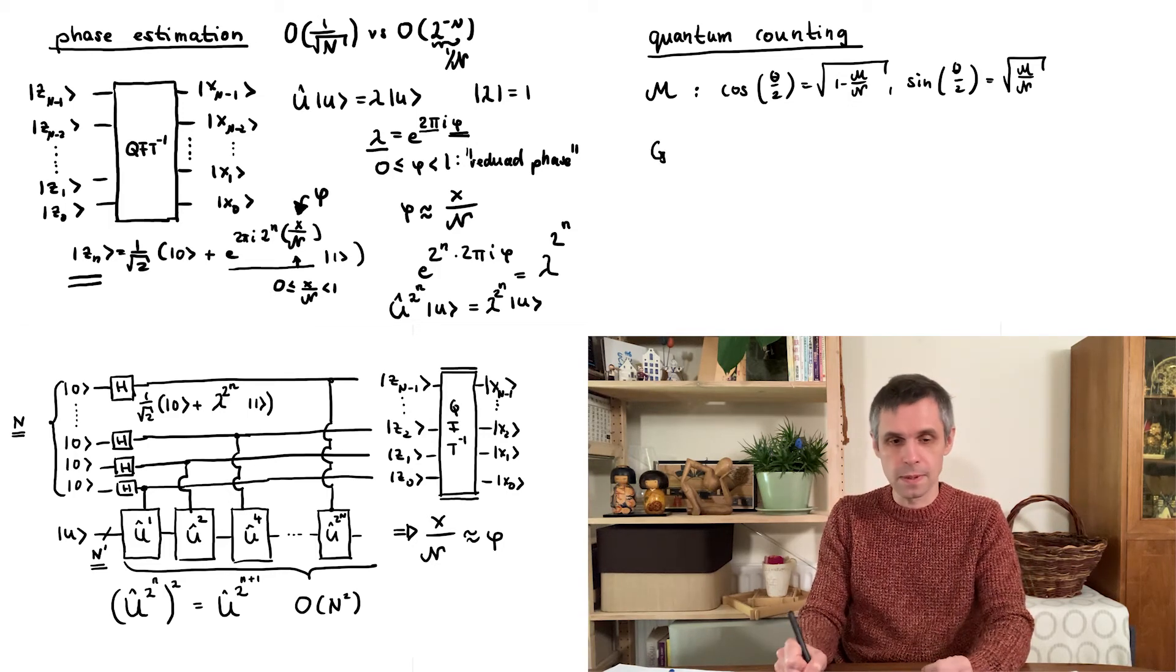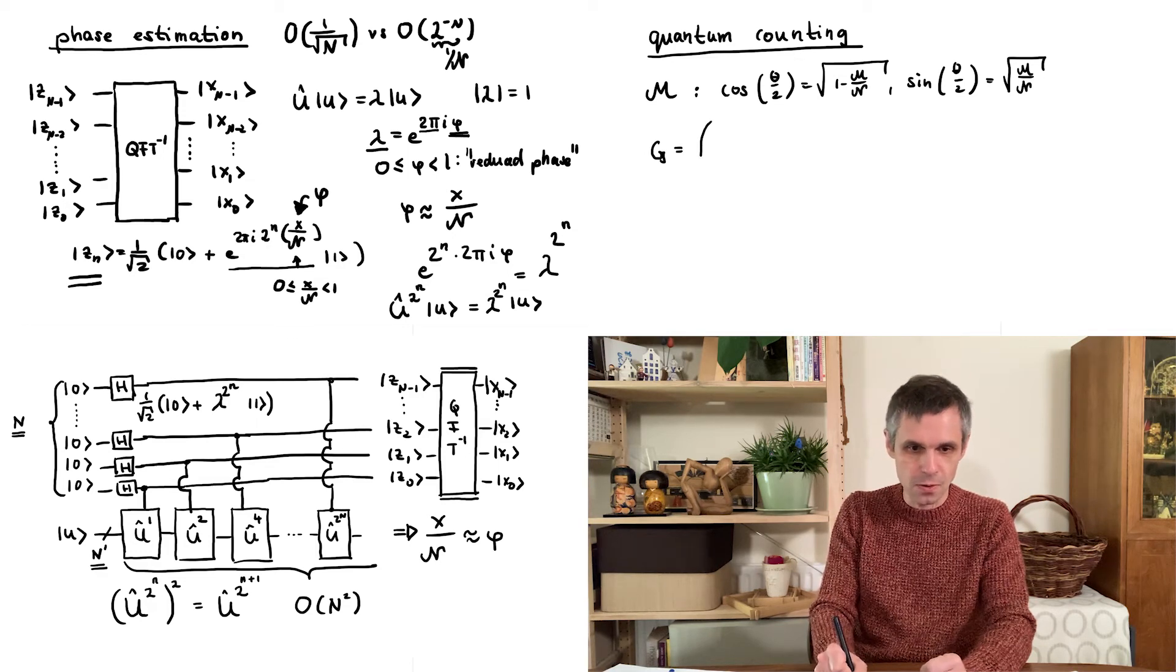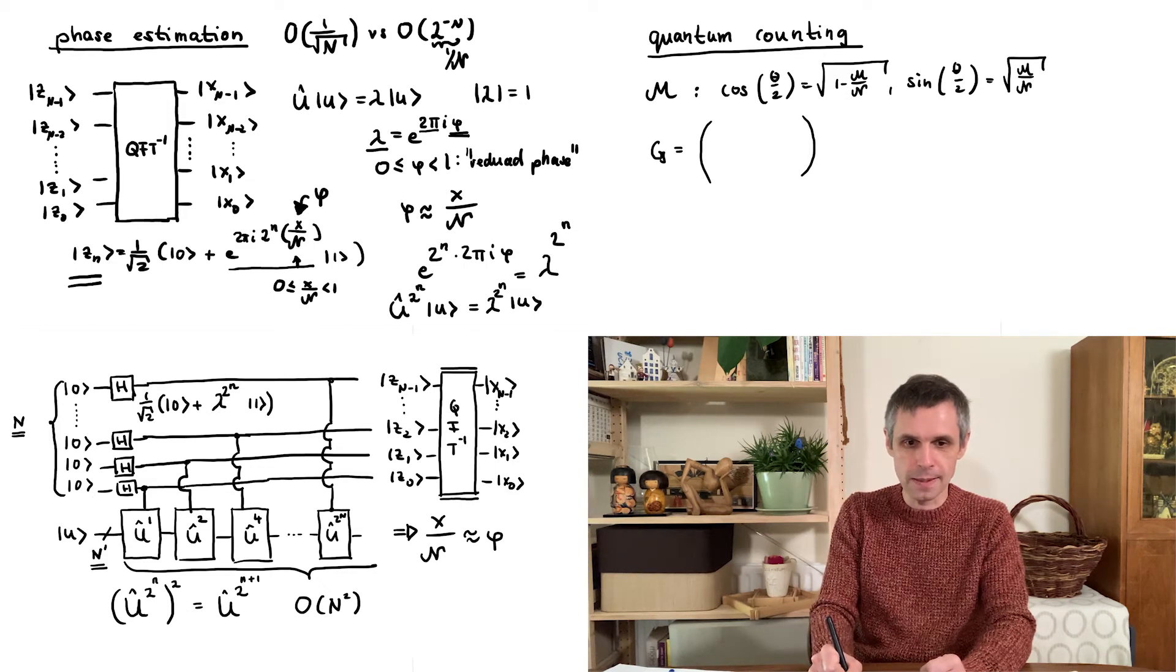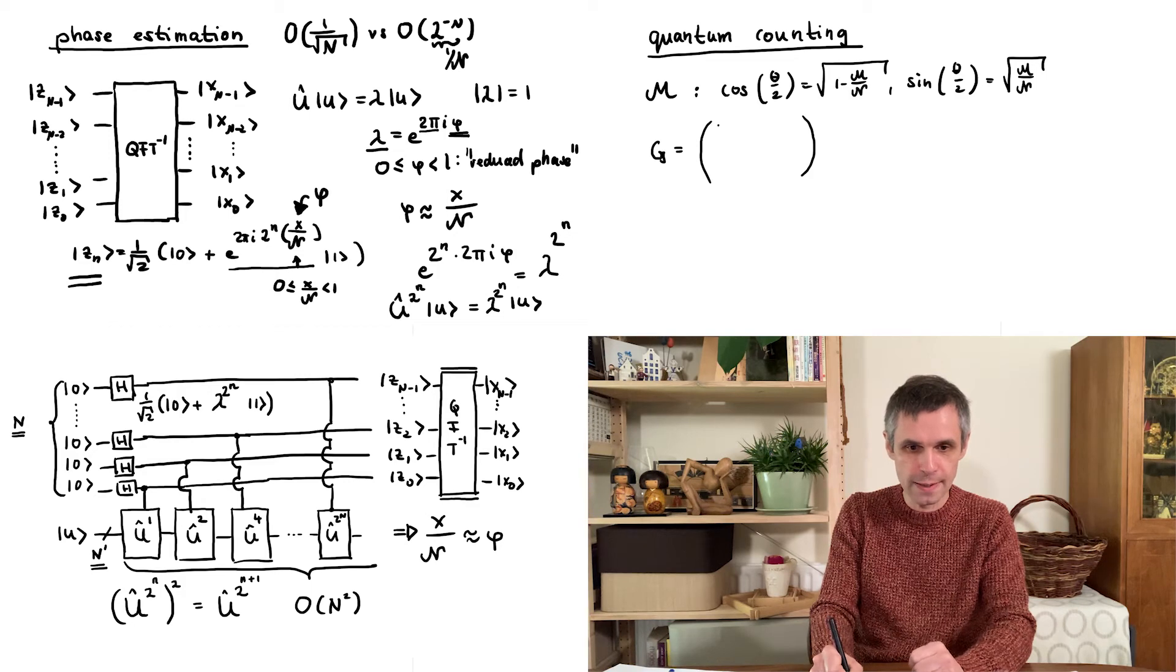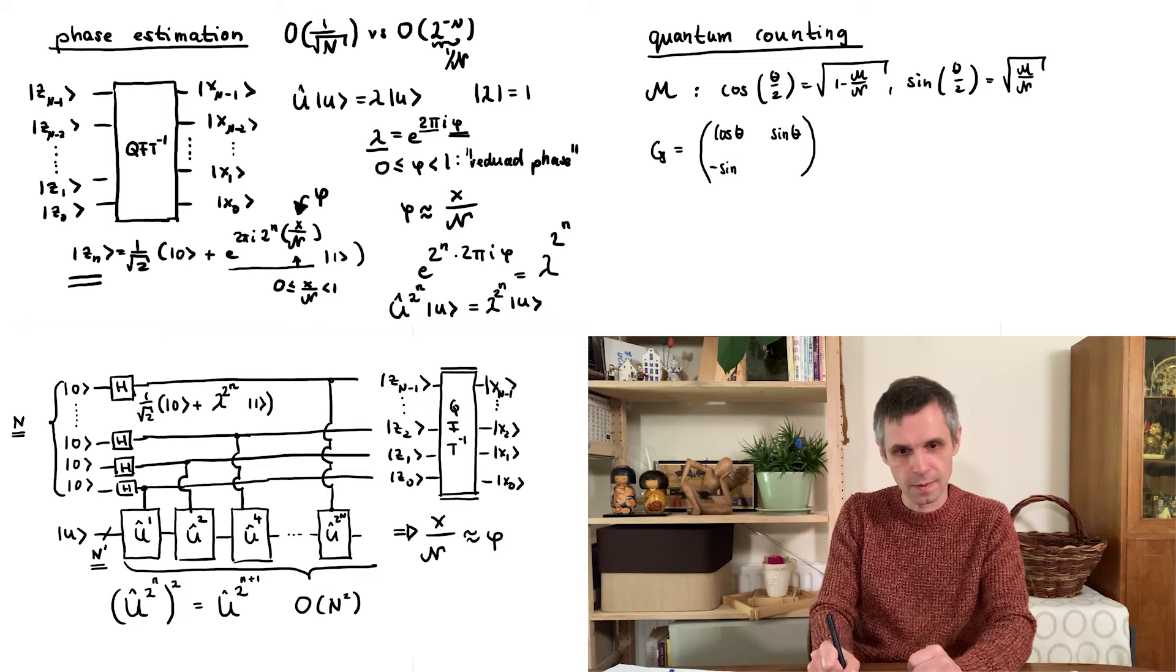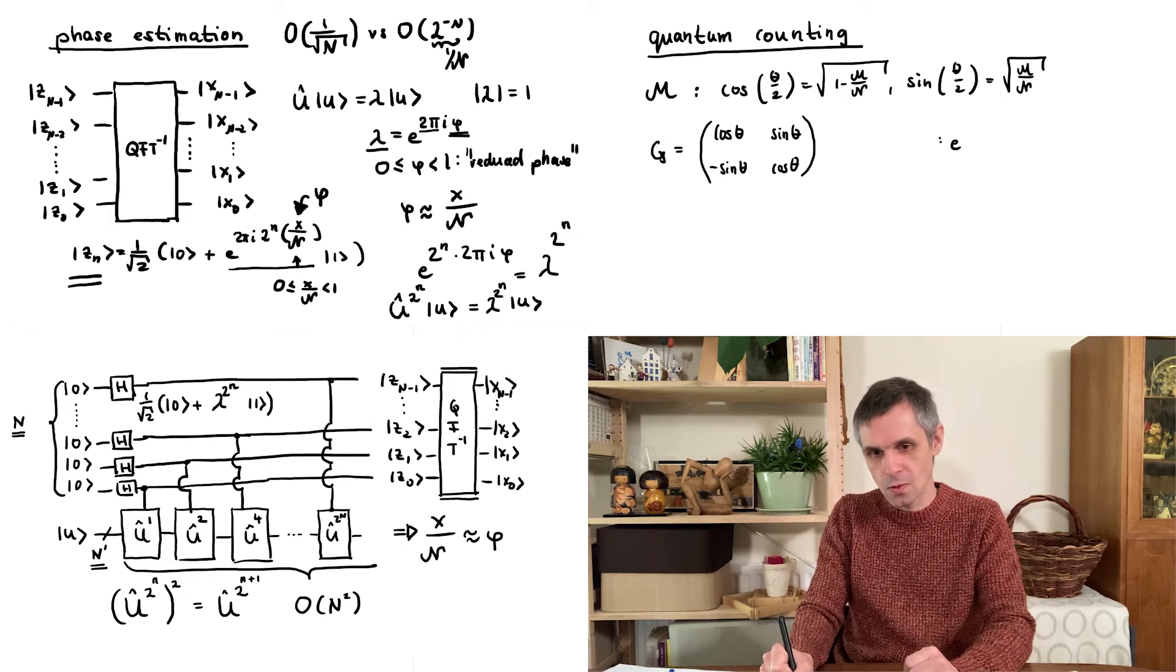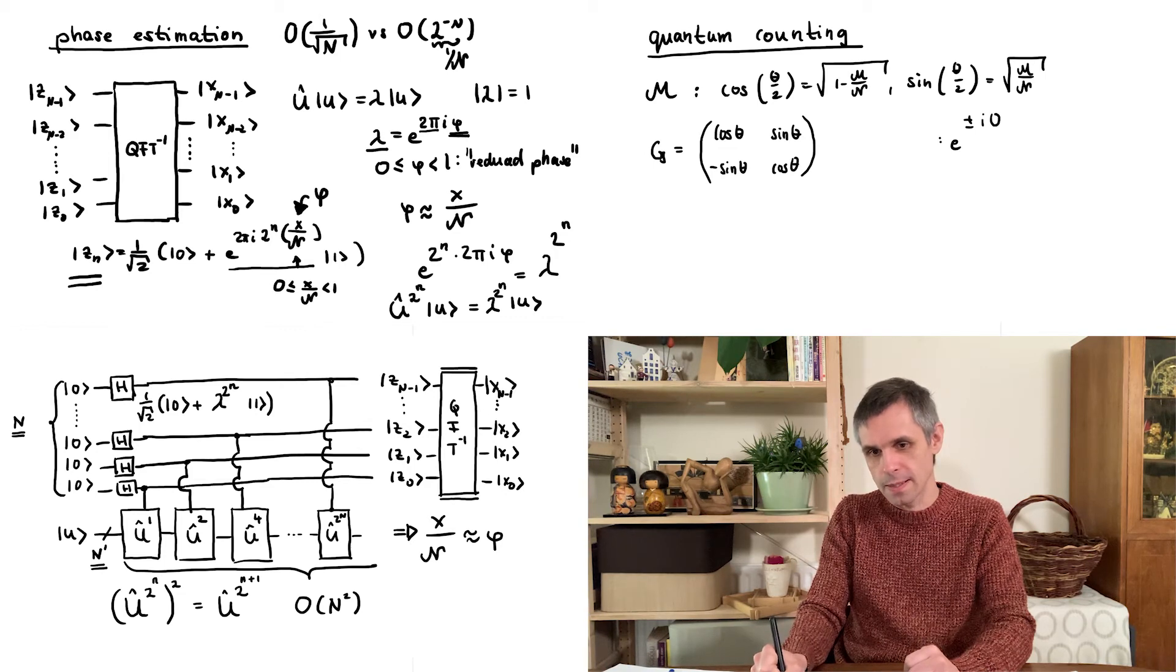But on the other hand, this is also just a rotation in the two-dimensional space of capital X and capital Y, the two states signifying all the items that match or don't. And in there, it is just an ordinary rotation matrix. And this matrix has the eigenvalues e to the plus or minus i theta.